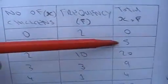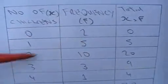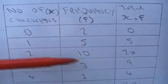So if I saw no chickens on two days, that's no chickens in total. If I saw one chicken on five days, that's five chickens. Ten days I saw two chickens, three days I saw three chickens. So what I've done here is multiplied across to get the total chickens I saw.